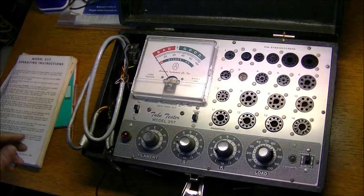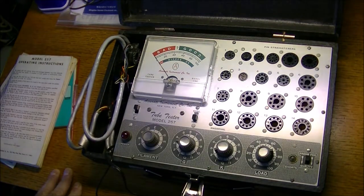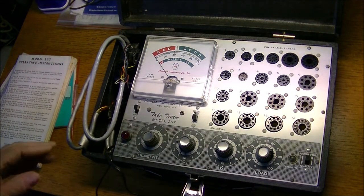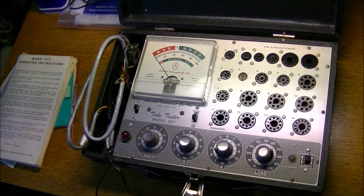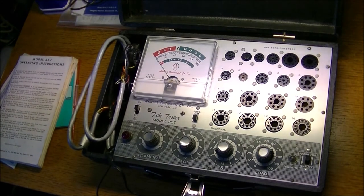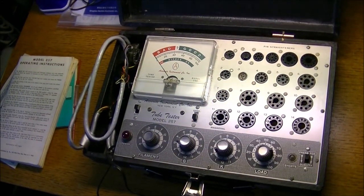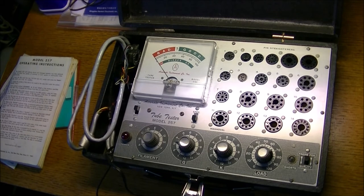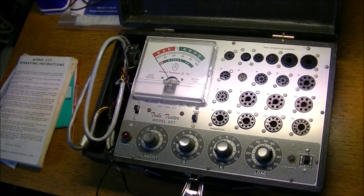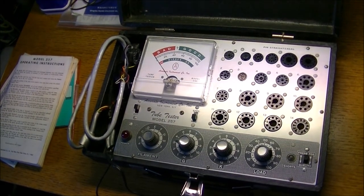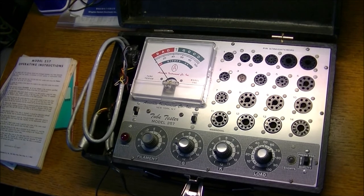But anyway, here it is. The Accurate Instrument Company Tube Tester Model 257. Hope you all enjoyed the little unboxing and preview. Look forward to another video on this, of me testing it. But that'll be in a little while, because I have to dig out an old power tube that I have that was sent to me. And there's a little story behind that one as well. Talk to you soon.